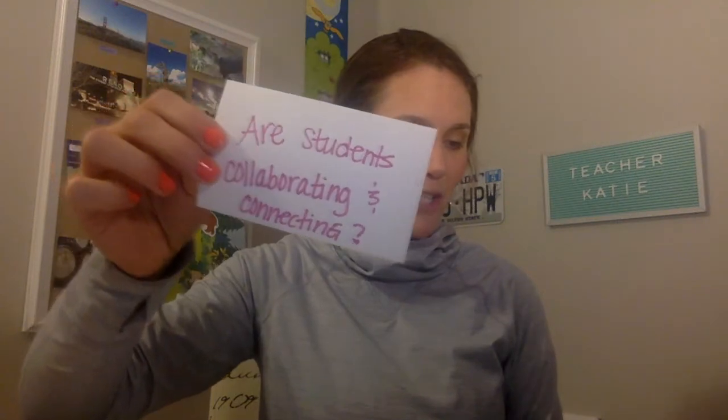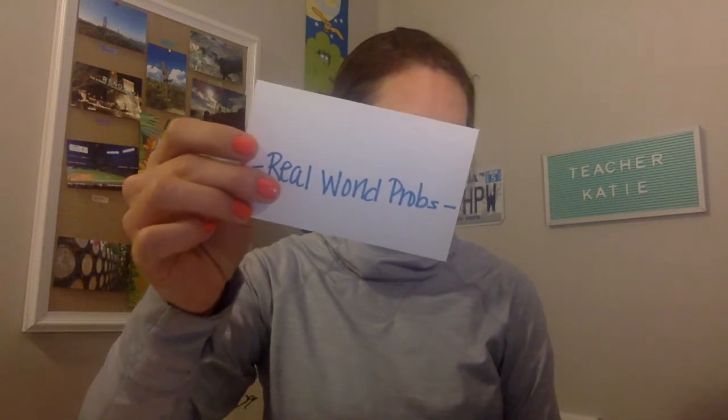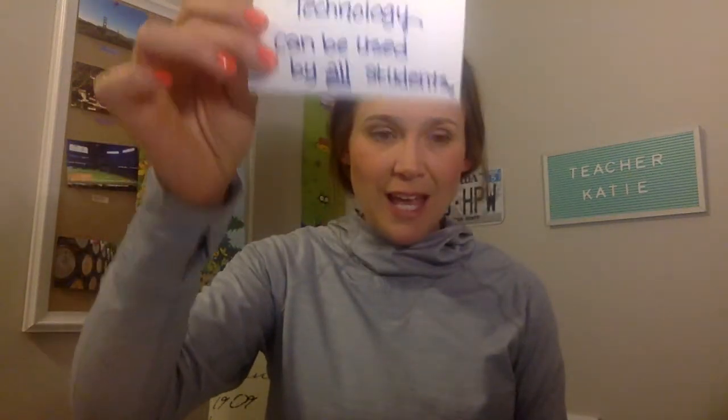Third: does the technology I'm implementing allow for collaboration and connection? I really want to make sure we don't lose sight of that one-on-one connection and that technology doesn't just take over. Fourth: am I using technology to help students build knowledge about real-world problems — using Google or other resources to raise awareness and inspire students to contribute to making the world a better place? And fifth: are all my students able to use the technology? Making sure it's accessible to everyone is high on my list. All of this is posted below.